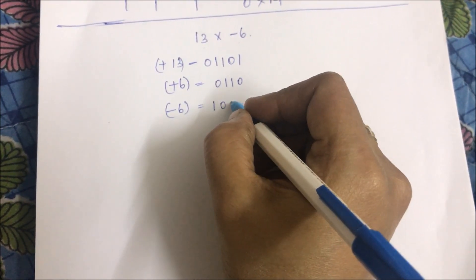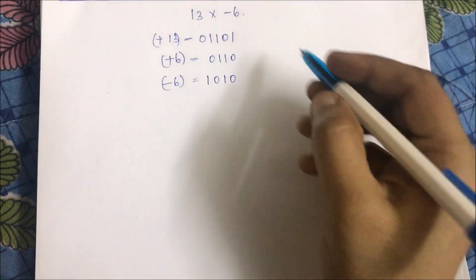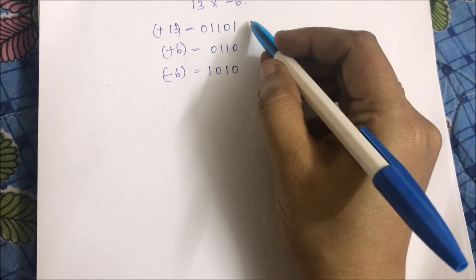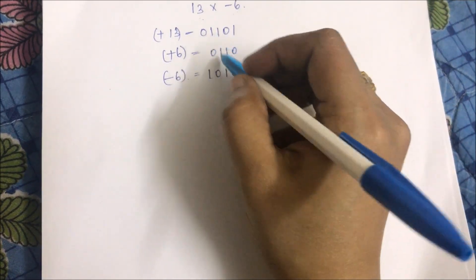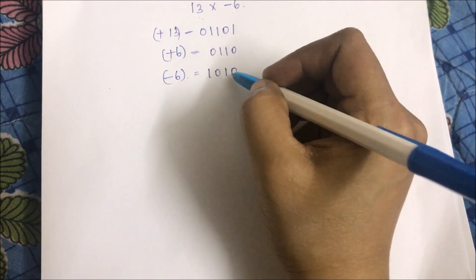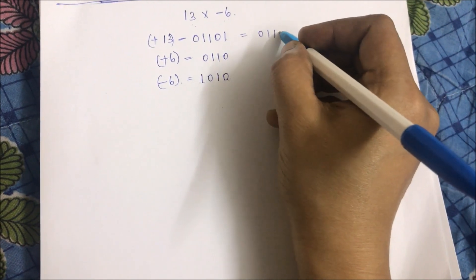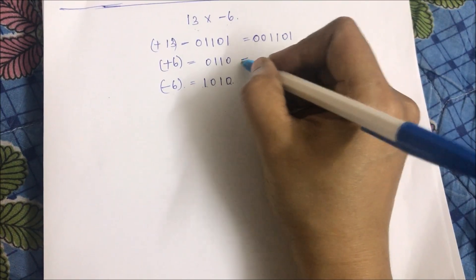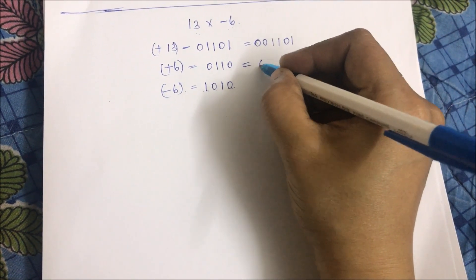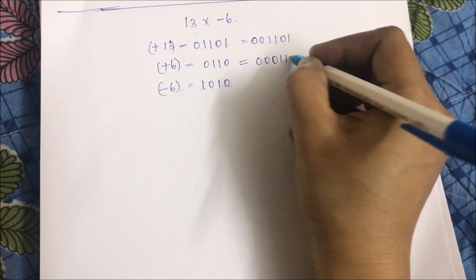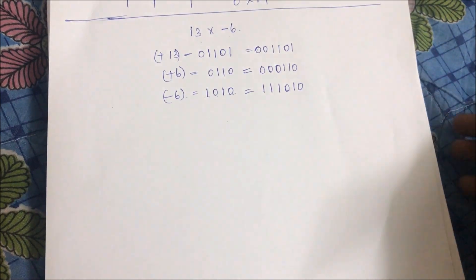Minus 6 in two's complement is 101010. According to Modified Booth's Algorithm, the number of bits in the multiplicand or multiplier must be an even number. We already have 4 digits which is even, but here we have 5 bits, so we make it 6 bits: 001101. We also make both operands the same number of bits, so -6 becomes 111010 in 6-bit two's complement.